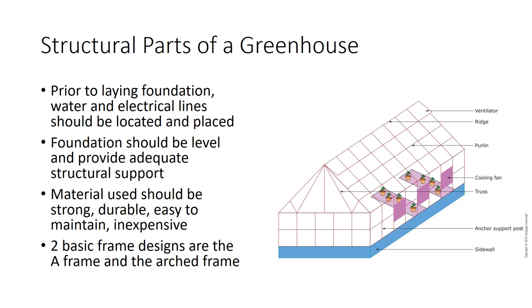Two basic frame designs are used for greenhouses: the A-frame and arched frame. The structural components of a simple greenhouse include the ridge, anchor support posts that provide the main structural support, trusses, purlins, ventilators, cooling, and cooling fans.